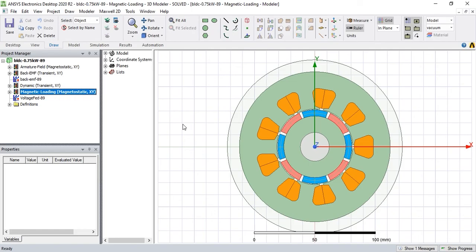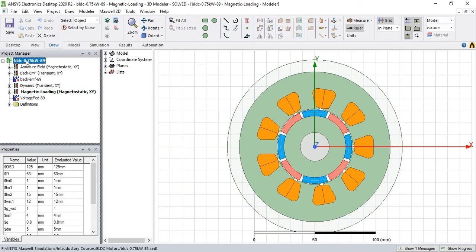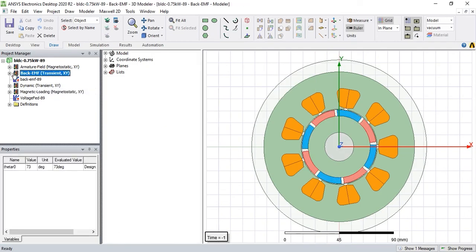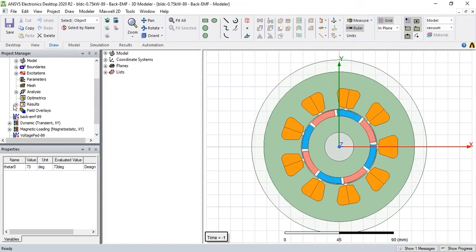You don't need to have a strong background of ANSYS Maxwell software. I will explain you all settings and contents that you need to analyze BLDC motors. As you can see here, we have this project and under each project we can insert multiple designs for different purposes. For example, this one is calculation of the magnetic loading, this is the calculation of the phase back EMFs.